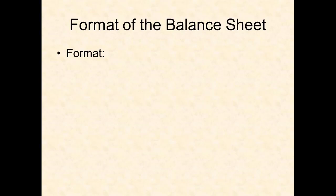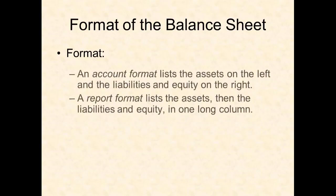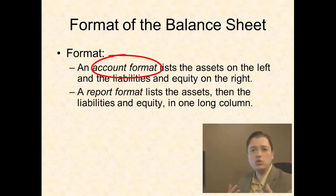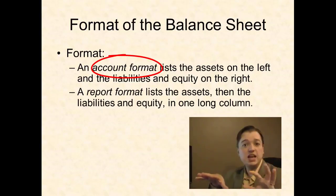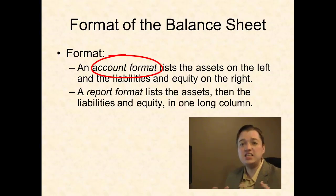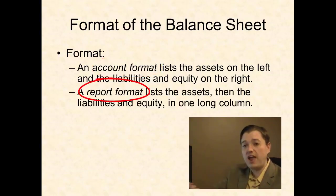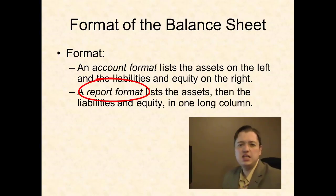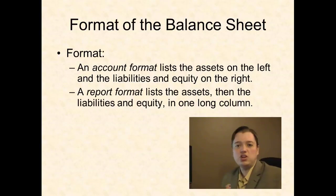The balance sheet has two different formats. The first is the account format — the old style — where we list all assets on the left and liabilities and equity on the right, giving a debit-and-credit picture consistent with assets equals liabilities plus equity. We've moved away from that because of SEC reporting; the SEC prefers the report format, which is one long list keeping the asset section separate from the liabilities and equity section. Most companies, even those not publicly traded, have shifted to the report format by default, though small companies may still use the account format.